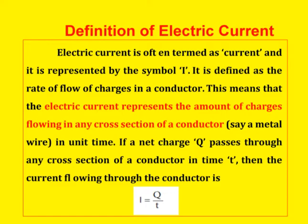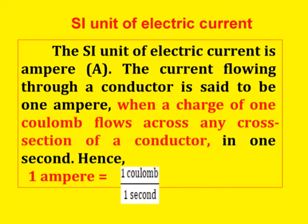The formula is I = Q / T. The SI unit of electric current is ampere, denoted by the letter capital A. The current flowing through a conductor is said to be one ampere when the charge of one coulomb flows across any cross section of a conductor in one second. So, 1 ampere = 1 coulomb / 1 second. This formula could be asked in objective type questions.